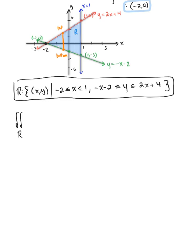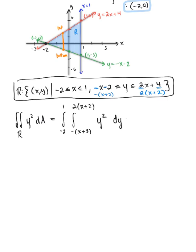We were given the double integral over region R of y squared dA. The outer integral is with respect to x from negative 2 to 1. Notice our lower bound has a greatest common factor of minus 1, so we write it as minus(x plus 2), and the upper bound has a greatest common factor of 2, so we write it as 2(x plus 2). The order of integration is dy dx.